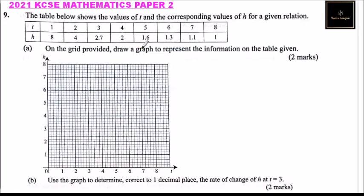Part (a): on the grid provided, draw a graph to represent the information on the table given. You get two marks. So we have the y-axis representing h and t on the x-axis.